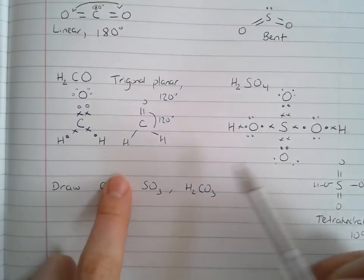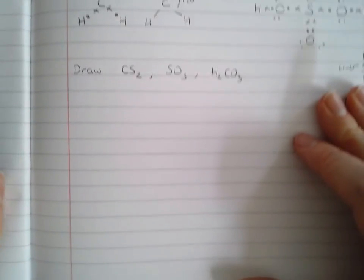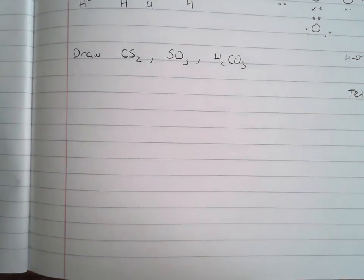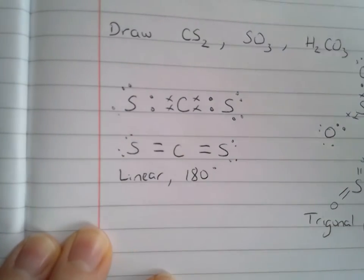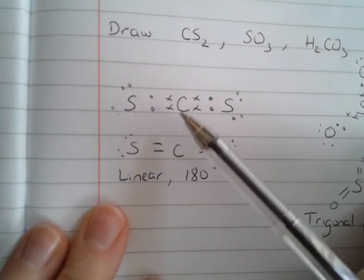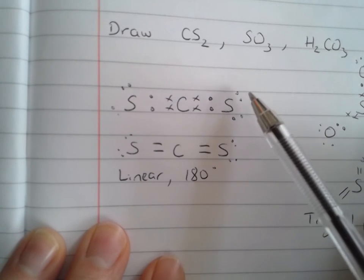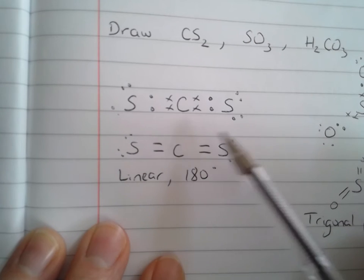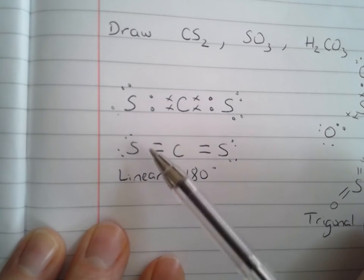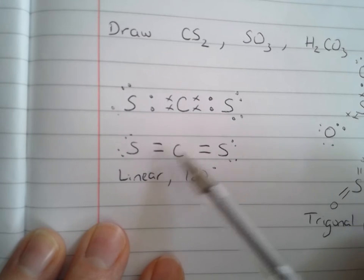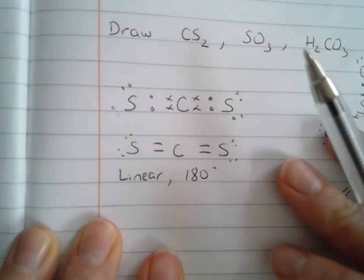Have a go at drawing CS₂ and SO₃ for yourself. Press pause, have a go, then press play when you're ready to look at the answers. For CS₂, you should see you've got a double bond between carbon and each sulfur, giving two bonding regions, which means it's linear at 180 degrees. Make sure you're not counting those as separate bonds — count them as one bonding region each.